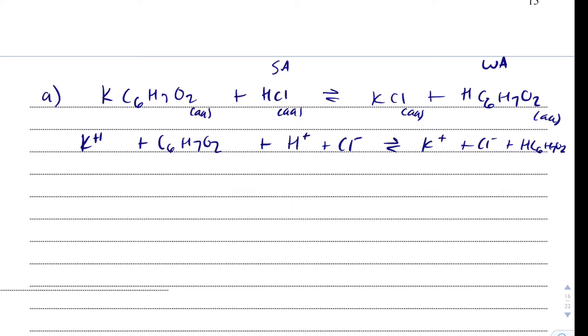So now what I can do is I can cancel what cancels. And I'm going to be left with C6H7O2 minus, and I forgot the minus one charge there, so that's my bad, plus H plus goes to HC6H7O2. And these guys are all aqueous. So that is question A.